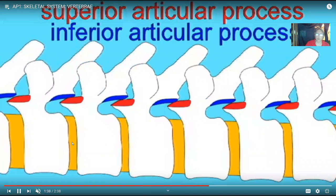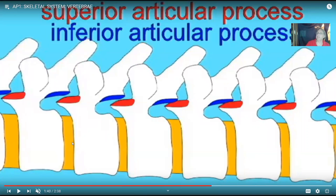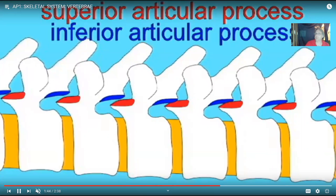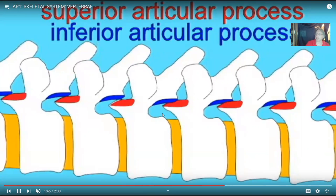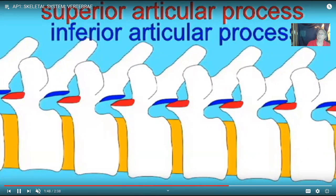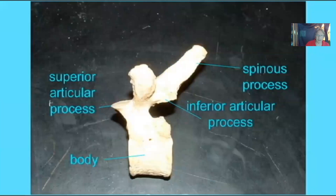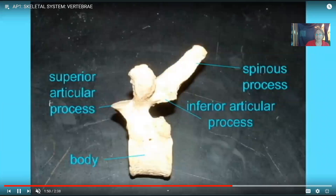Between the bodies of neighboring vertebrae are the intervertebral discs, which include both fibrocartilage and a central nucleus pulposus — the remnants of the embryonic notochord. This helps to cushion shock, so when we jump, the forces are absorbed rather than bone hitting neighboring bone.